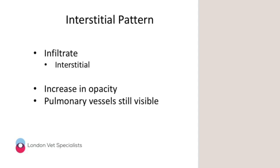The first pattern is an interstitial pattern. The lung is made up of alveoli, bronchi, and pulmonary vessels with interstitium in between them all. The interstitium is like the connective tissue, the glue that holds all those other structures together. If you have an interstitial pattern, that means there's infiltrate within the interstitium — between all of those pulmonary structures. There's no infiltrate within the alveoli, the bronchi are normal, the pulmonary vessels are normal, but there's infiltrate in between. What happens is you have an increase in opacity, but it's not so opaque that you can't see the other structures.